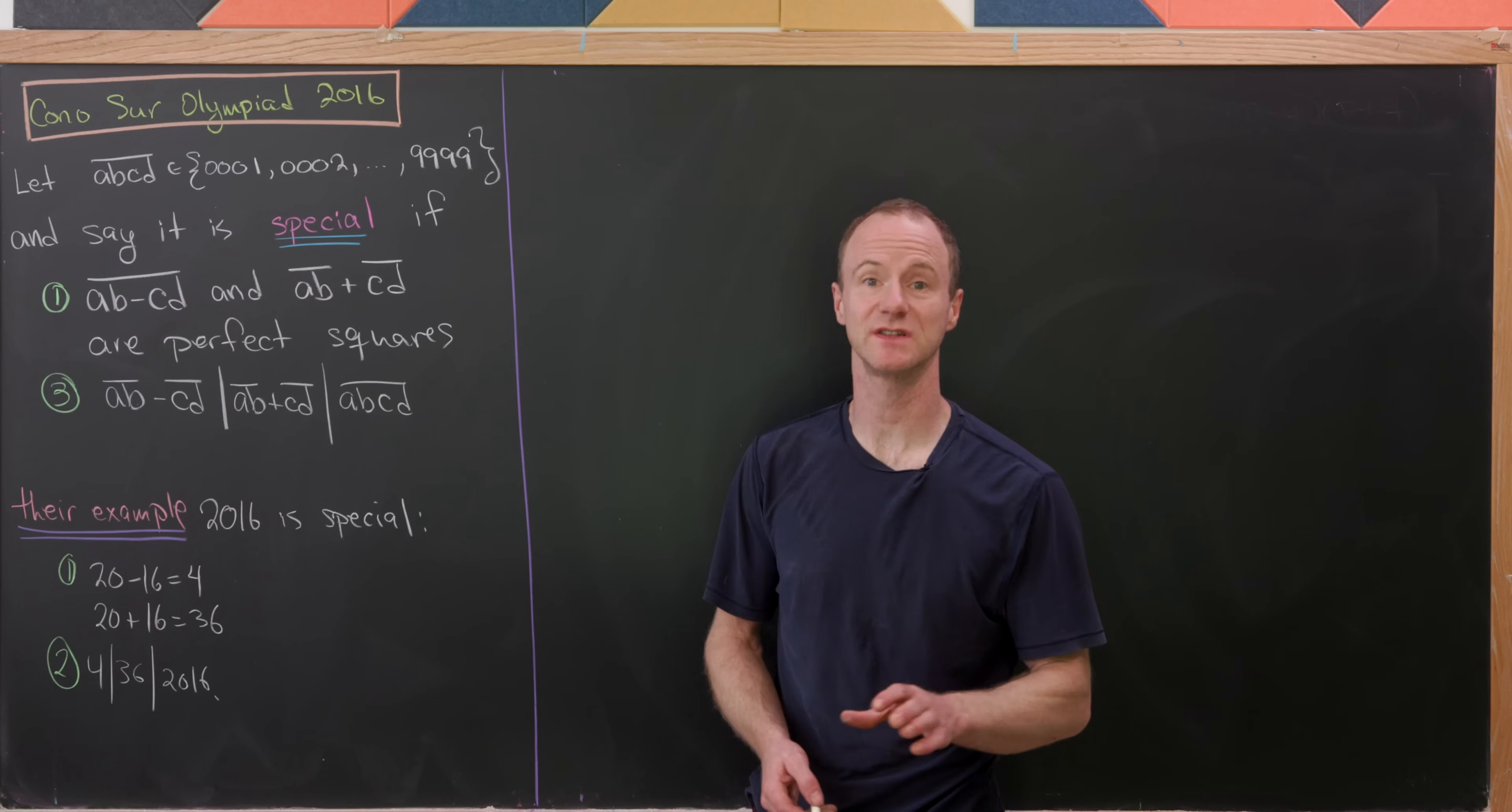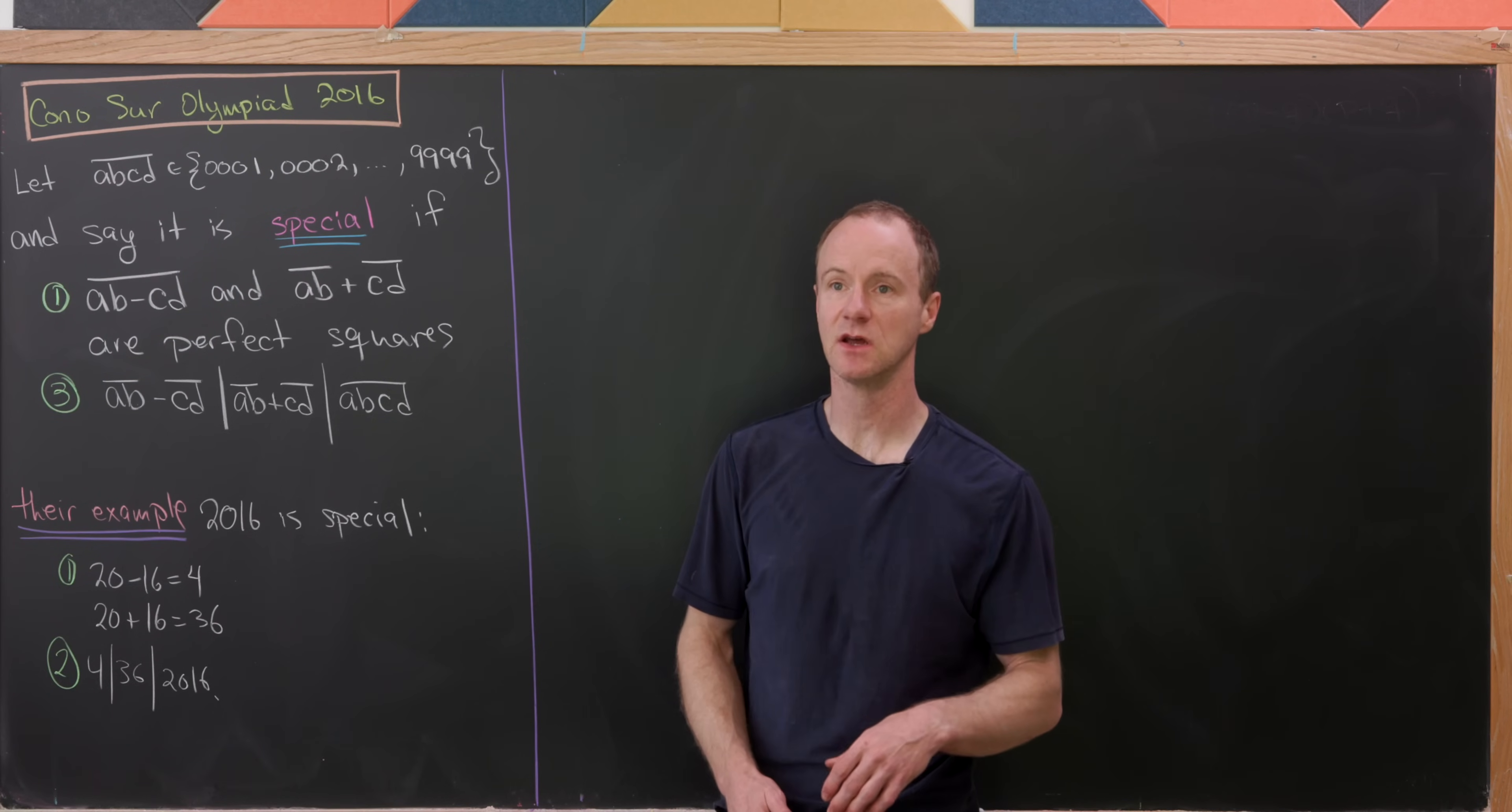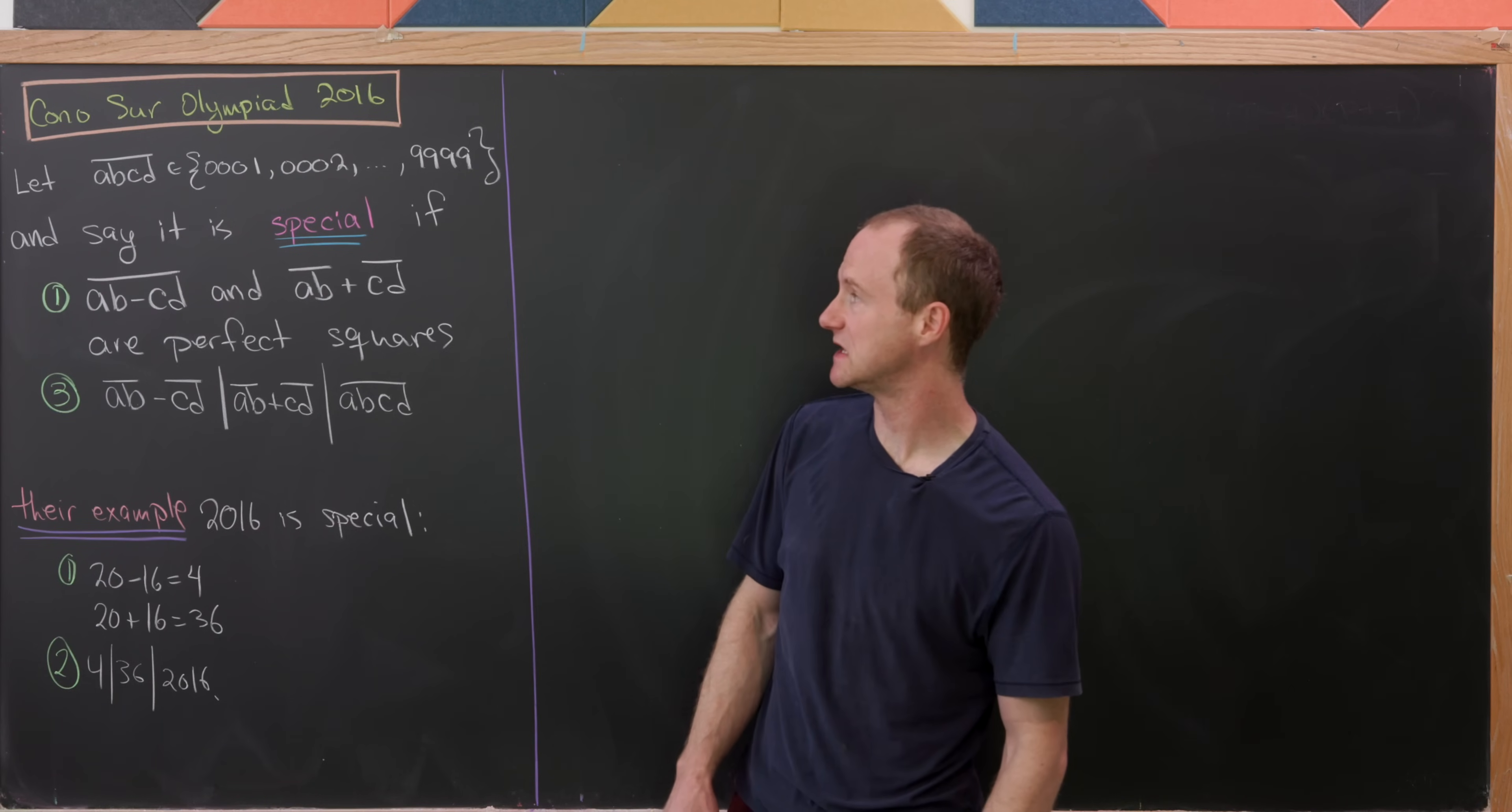Let's look at a nice problem that comes from a South American math Olympiad from the year 2016. Let's use this notation ABCD overline to mean the number with the digits ABCD.